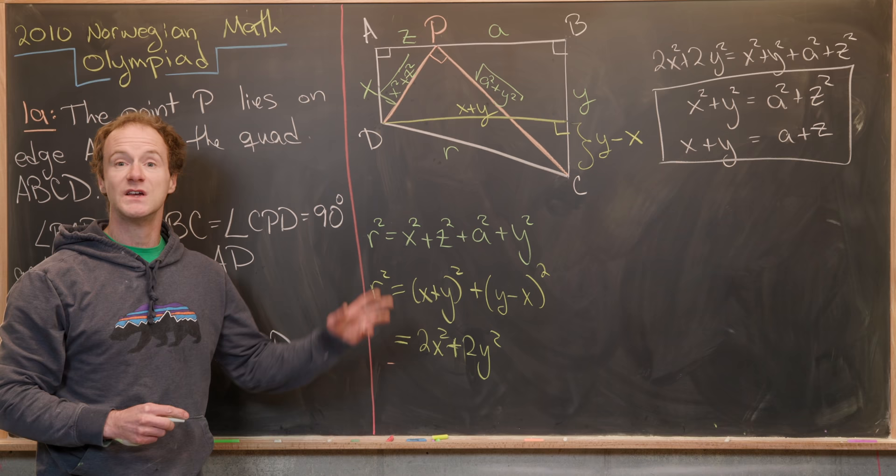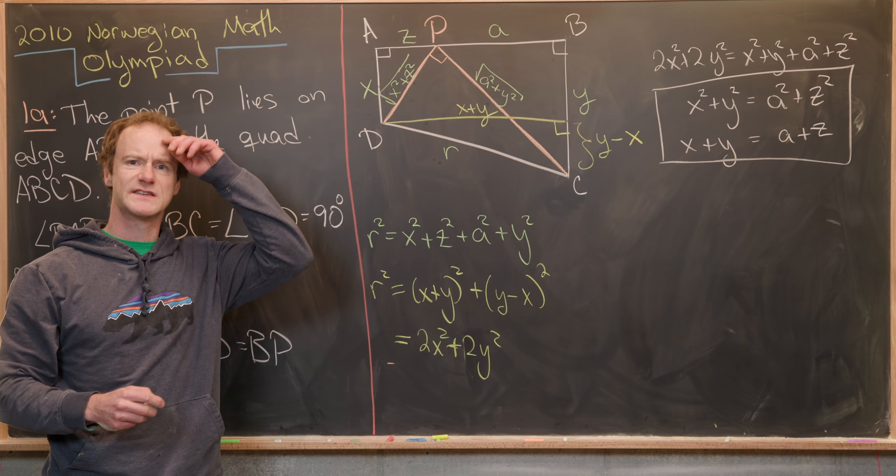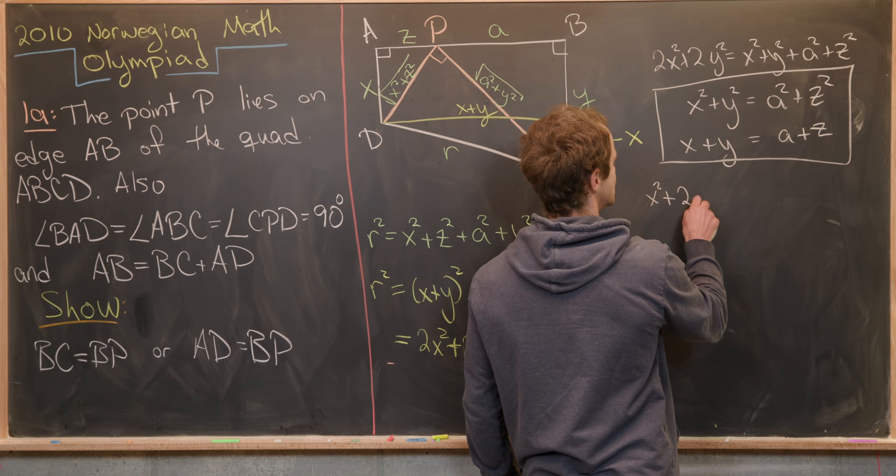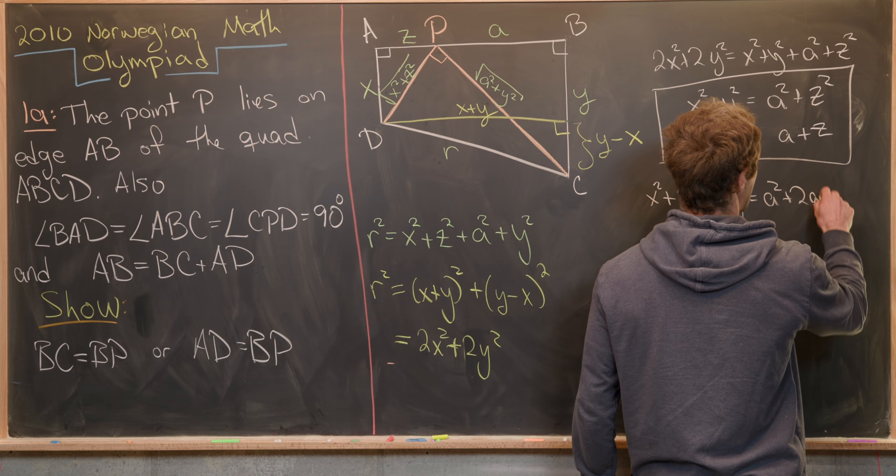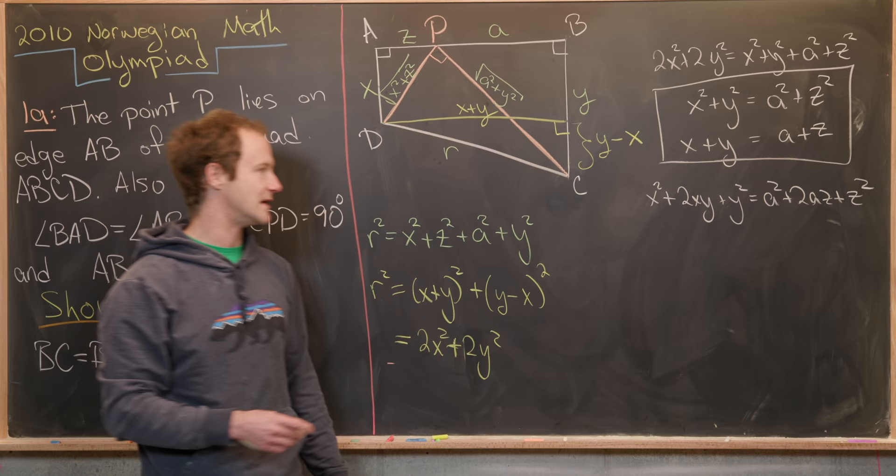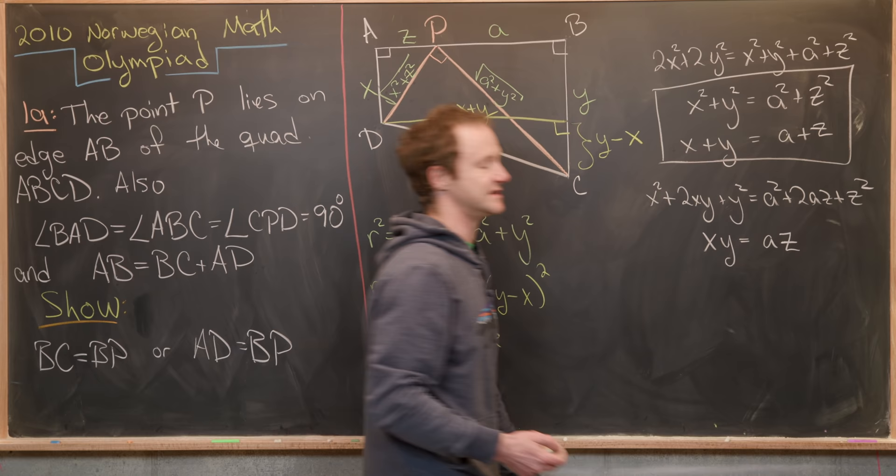So now we've got this nonlinear system of two equations. So I'm going to tweak this a little bit to give me an equivalent nonlinear system of two equations. I can square this guy right here to give us X squared plus 2XY plus Y squared equals A squared plus 2AZ plus Z squared. But then I can cancel out the X squared plus Y squared and the A squared plus Z squared on both sides, then divide by 2, and that gives me XY equals A times Z.